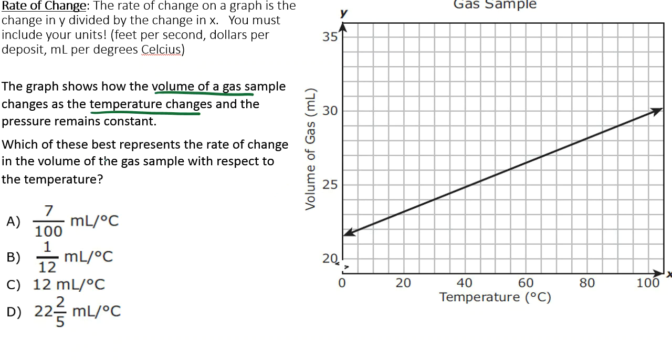It says which of these best represents the rate of change in the volume with respect to the temperature. Notice the volume is along our Y axis, the temperature is along our X axis, and rate of change is going to be the change in Y divided by the change in X. So all we have to do is find a couple points on the graph, and I'm going to do my very best to pick a whole number value because I don't want to really deal with decimals on the graph.